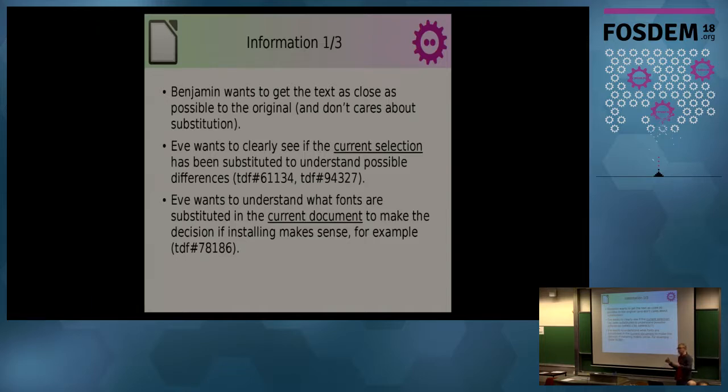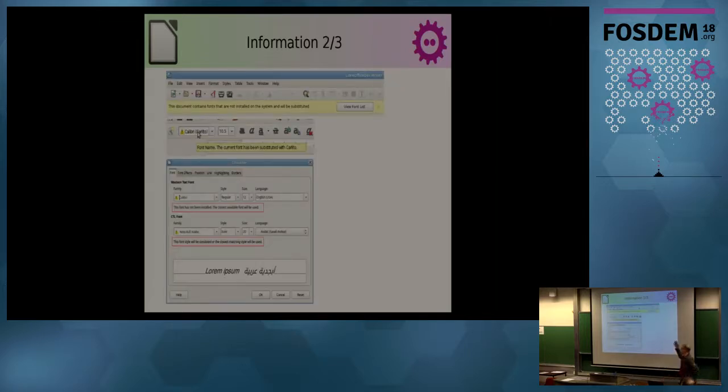It could be solved like this: first of all if you open a document you can show easily an info bar here saying there is something that has been replaced. Second one is the drop down, the font list drop down could easily show what font has been replaced by which one. Finally the dialogue at the bottom, it's also not a big thing to show here what happened.